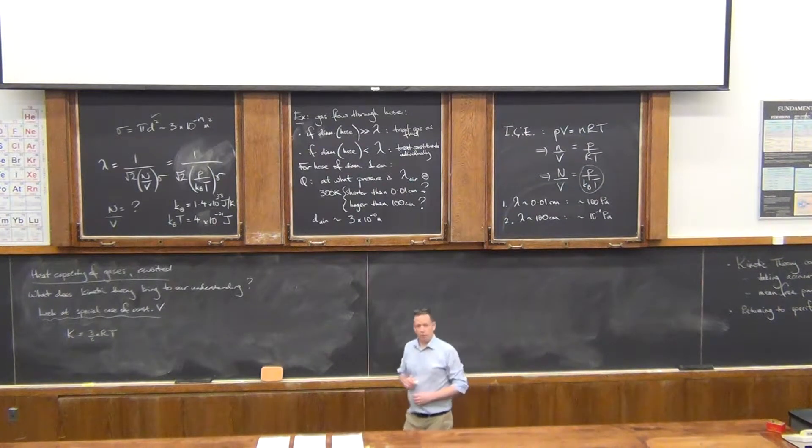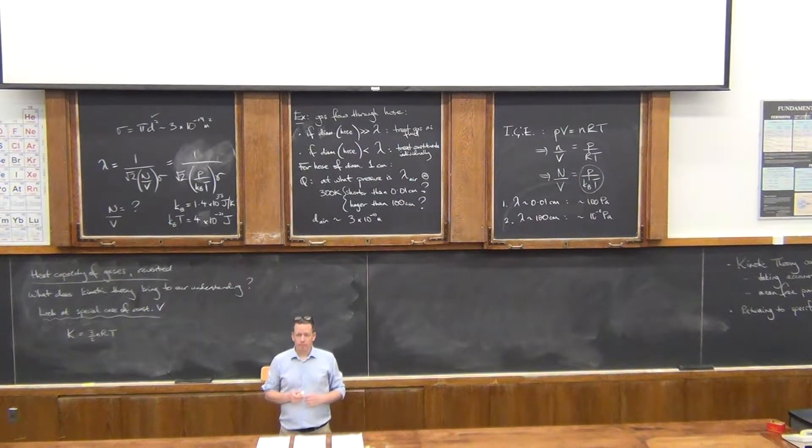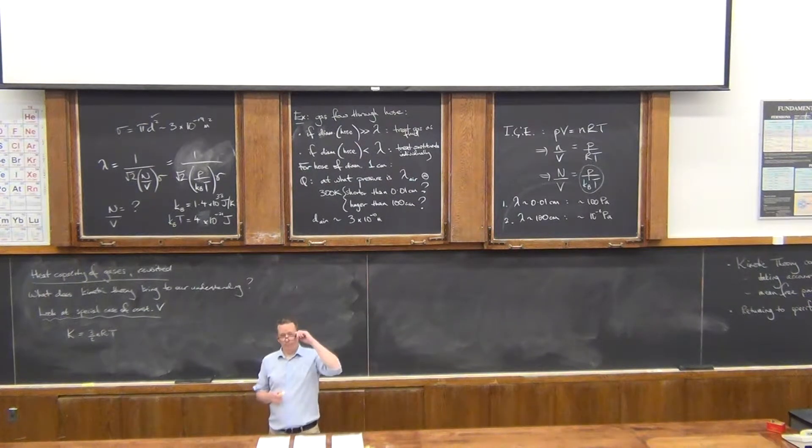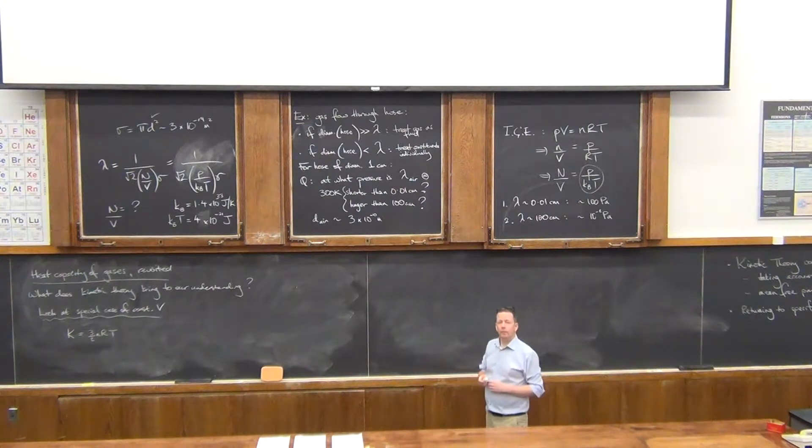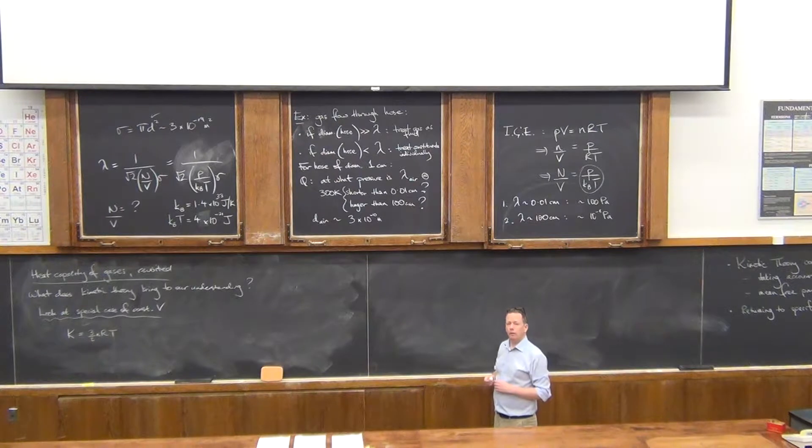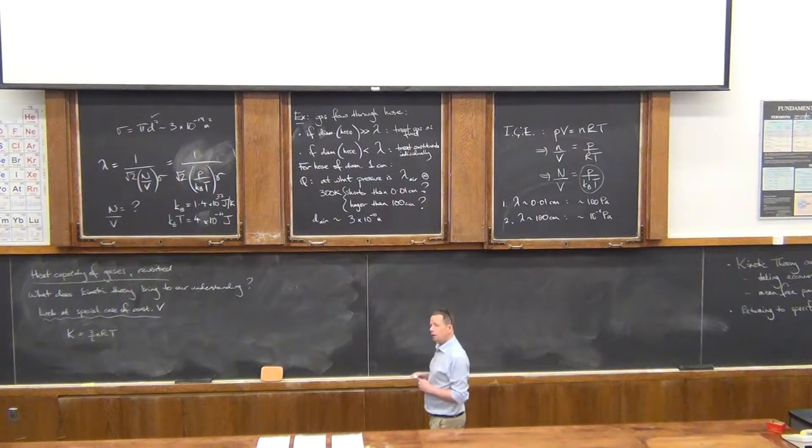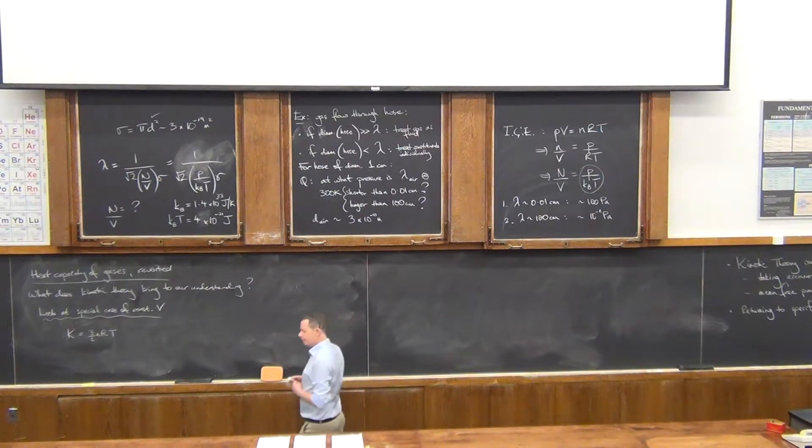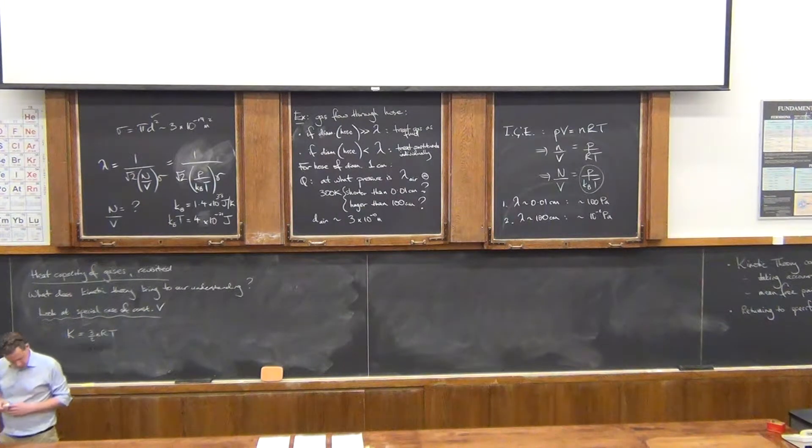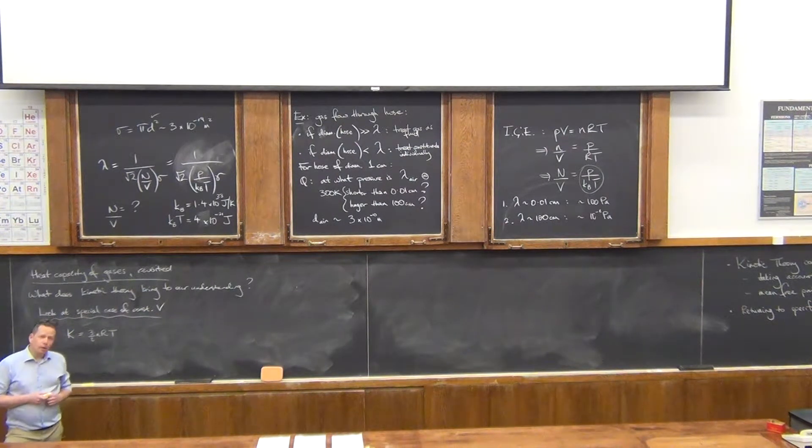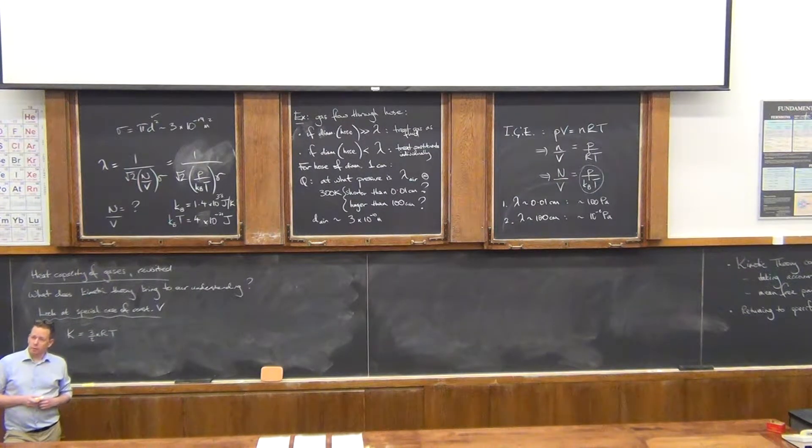Questions. Before we come back to specific needs for the last 10 minutes. Yeah. Go ahead. Why is the cross sectional area pi D squared rather than like pi R squared?